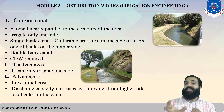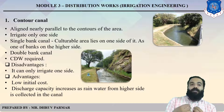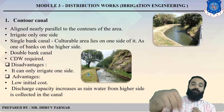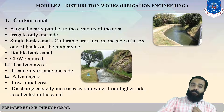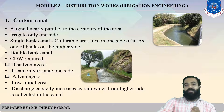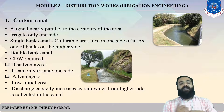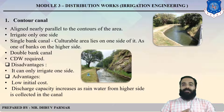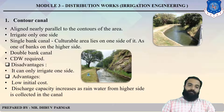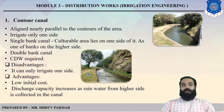In a single bank canal, the culturable area lies on one side of the higher bank. In a double bank canal, there are obstructions like a mountain on both sides. The main disadvantage of the contour canal is that it irrigates only one side. The advantages are low initial cost, and discharge capacity increases as rainwater from the higher side is collected.